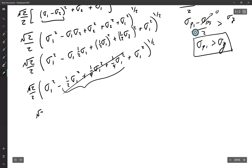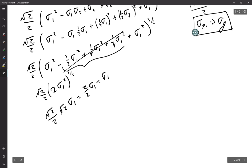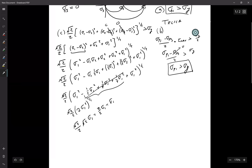So we have square root of 2 over 2, 2 sigma 1 squared to the one half, which becomes square root of 2 over 2, square root of 2 sigma 1 is equal to 2 over 2 sigma 1 is equal to sigma 1. And I dropped my requirement there, but it's going to be sigma Y.